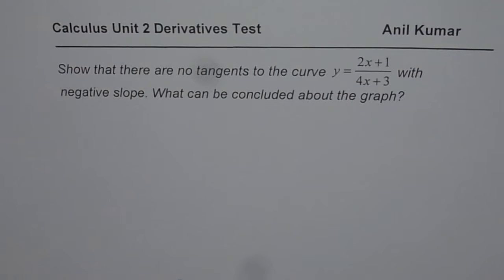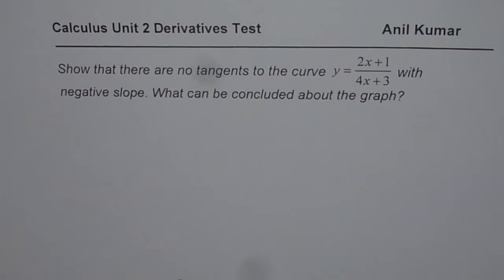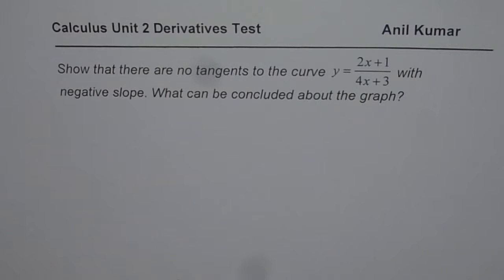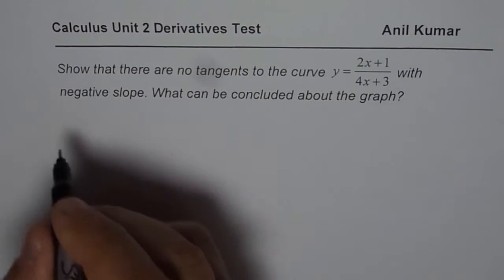I am Anil Kumar and here is the solution to one of the questions from the test paper. Show that there are no tangents to the curve y equals 2x plus 1 divided by 4x plus 3 with negative slope. What can be concluded about the graph?